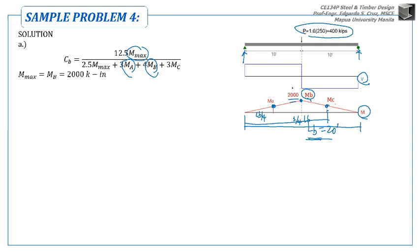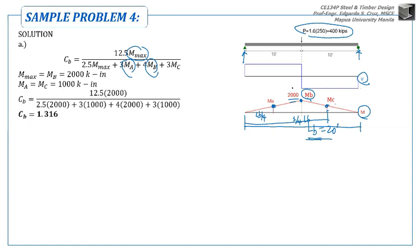So the Mmax equals MB, which is 2,000 kip-ft. While the MA and the MC are both equal to half of 2,000, which is 1,000. Substituting all these moment magnitudes in the Cb equations, we got Cb equals 1.316. Actually, in solving for Cb, regardless of the load, even if you just put it in terms of P, it will cancel out. You will arrive with the same value of Cb because it factors out as a function of P.